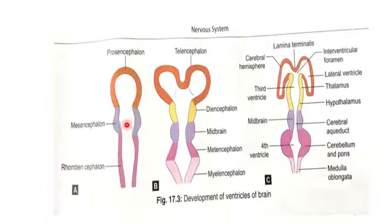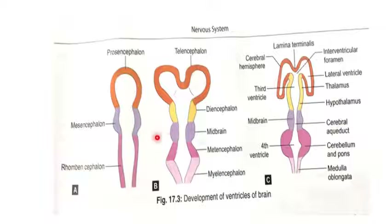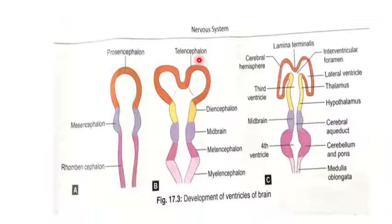The cranial part of the neural tube shows prosencephalon, mesencephalon, and rhombencephalon from cranial to caudal. The rhombencephalon divides into metencephalon and myelencephalon. The metencephalon forms the pons and cerebellum, while the prosencephalon divides into telencephalon and diencephalon. There are two right and left telencephalon vesicles which develop into the two cerebral hemispheres, with the diencephalon in the middle. The cavity of this cranial part represents the primitive cavity of the neural tube.